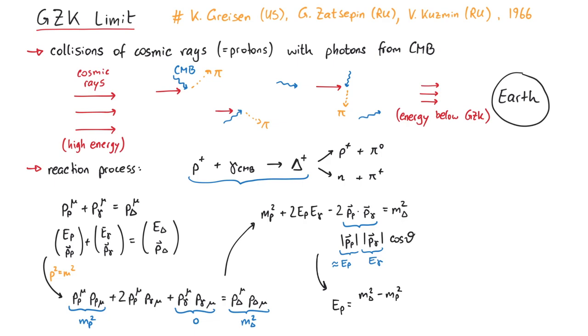The proton energy now depends on the proton mass, the delta mass, the CMB energy, and the scattering angle. For the first three quantities, we can use experimental data. And as for the scattering angle, we get the smallest energy if we choose theta to be equal to pi, because then 1 minus the cosine is as large as possible.